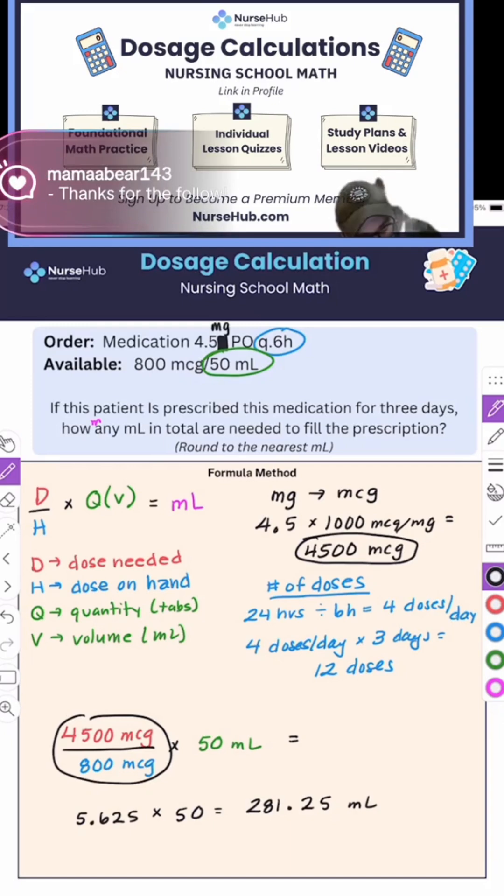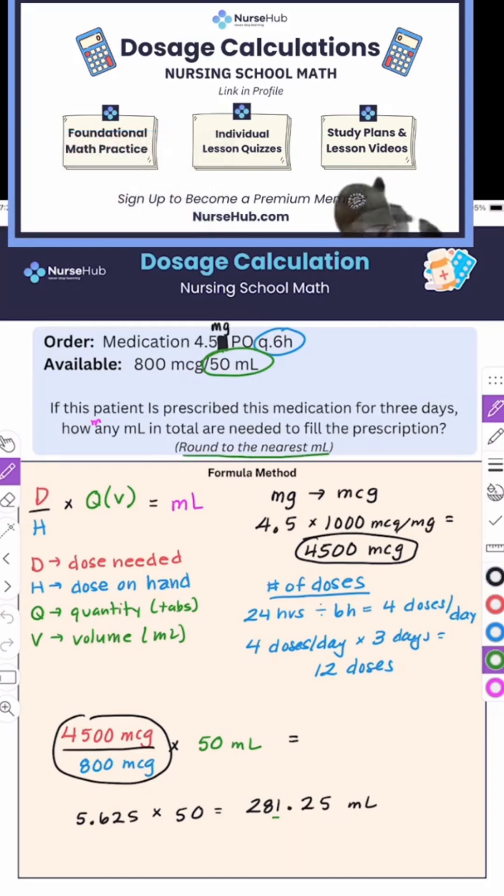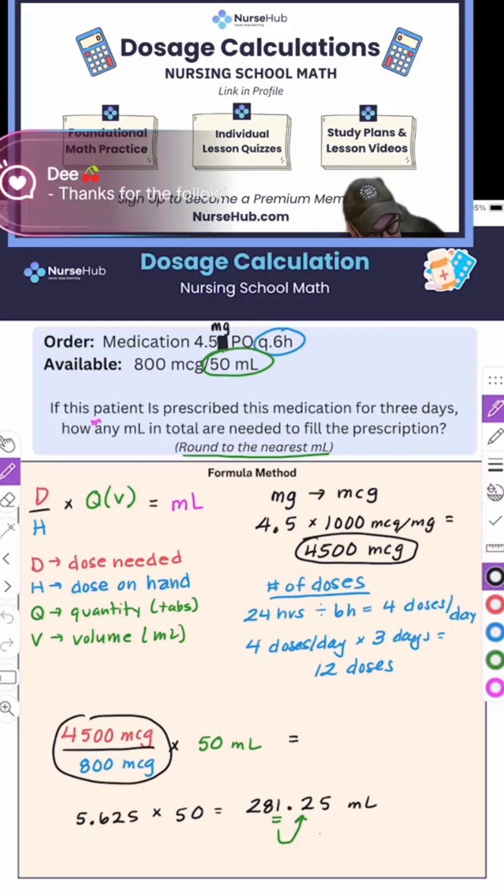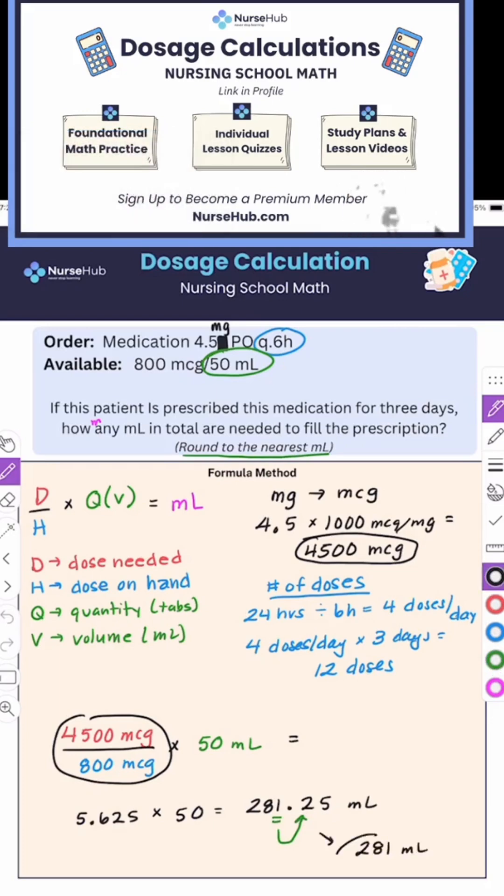Remember, this is round to the nearest milliliter. So that's our ones place. We look behind, we see a two, which stays the same. So our final answer would be 281 milliliters.